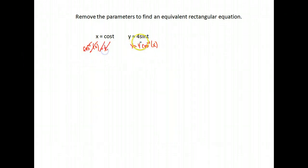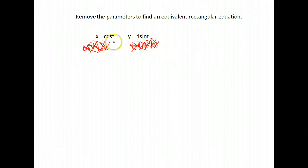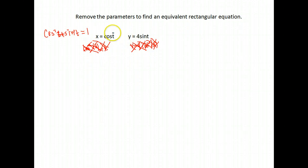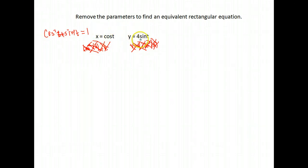So rather than doing that, what we're going to do instead is use what we know about trig identities. We know that cosine squared plus sine squared equals 1. So if we can make this a cosine squared and a sine squared, and add them together, that would remove our parameter. And that is really the best method to use when you have cosine and sine involved.